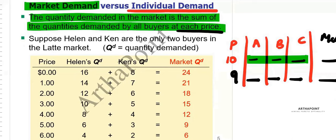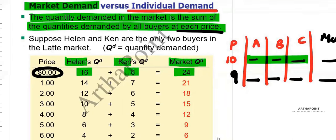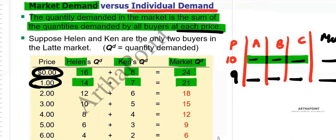At a given price — let me take the price as $0. At $0, Helen demands 16 and Ken demands 8, so the market demand is 24. Then at $1, Helen demands 14 and Ken demands 7, so the total becomes 21.